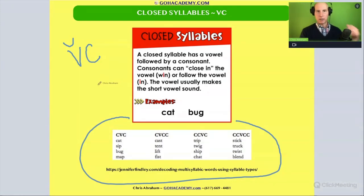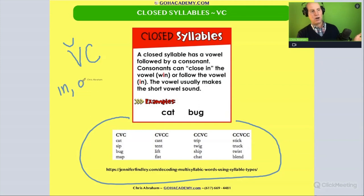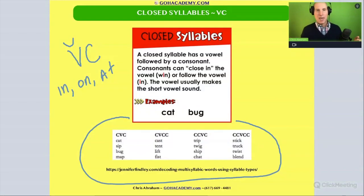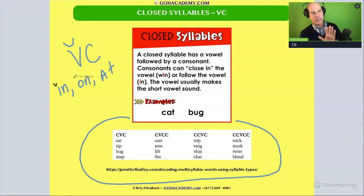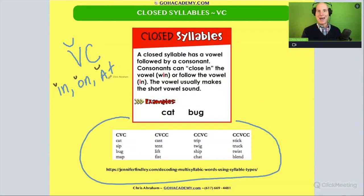Basic closed syllable words include VC words like 'in,' 'on,' and 'at.' These are all basic closed syllable words. Whenever you see a vowel-consonant pattern, for the most part, that first vowel is short. So these are all short vowel sounds — they're all short.